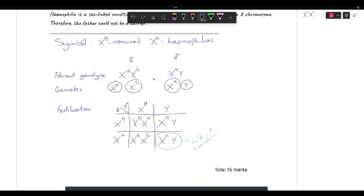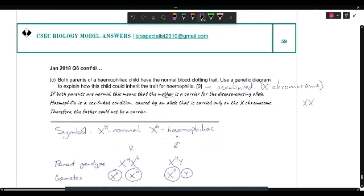So you show your diagram, symbol. Parent genotype, gametes. And you put it square and you indicate the child with hemophilia.